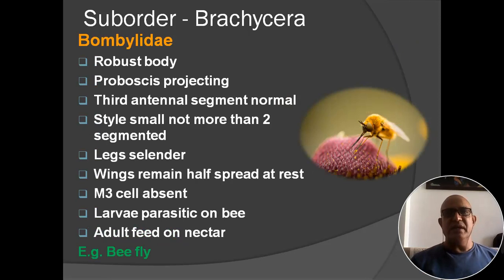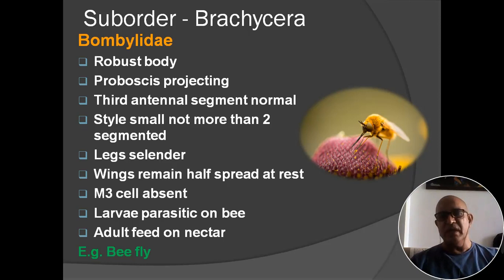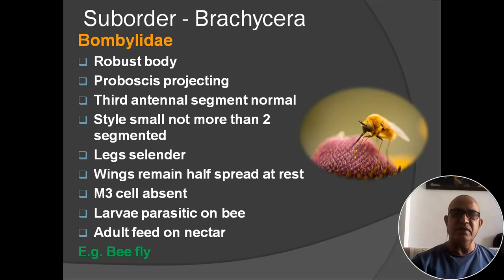Next family: Bombyliidae. Body robust; proboscis projecting; third antennal segment normal; style small, not more than two-segmented; legs slender; wings remain half-spread at rest; M3 cell absent; larvae parasitic on bees. Adults feed on nectar of flowers. Example: bee fly. This figure shows the bee fly.